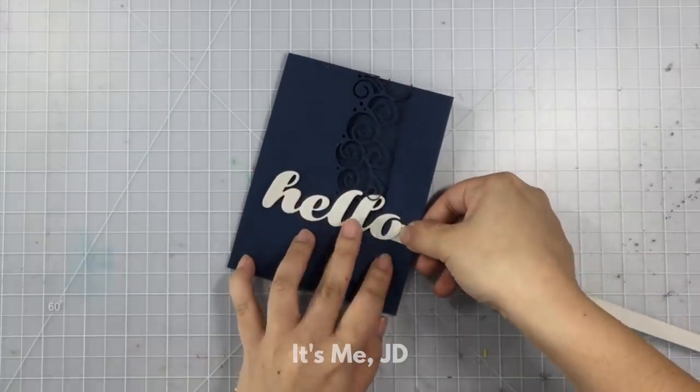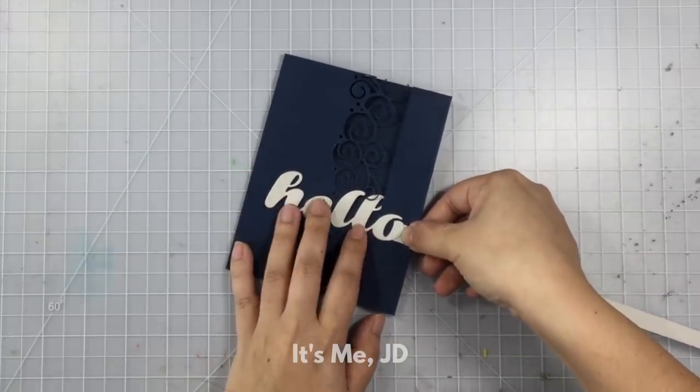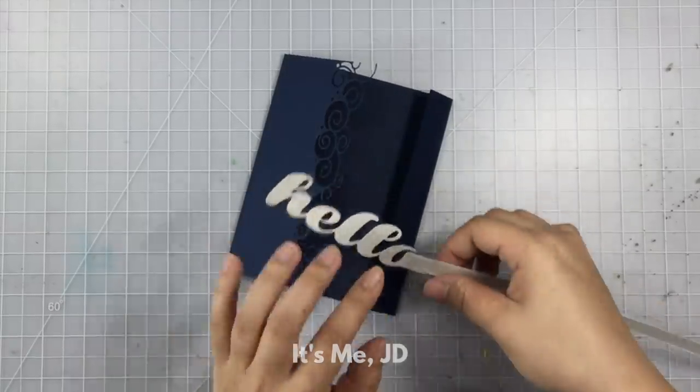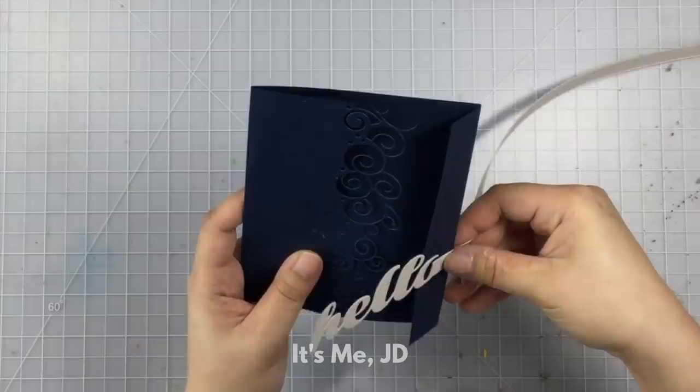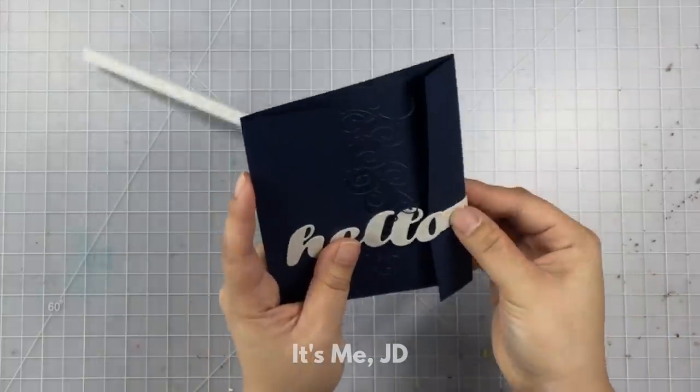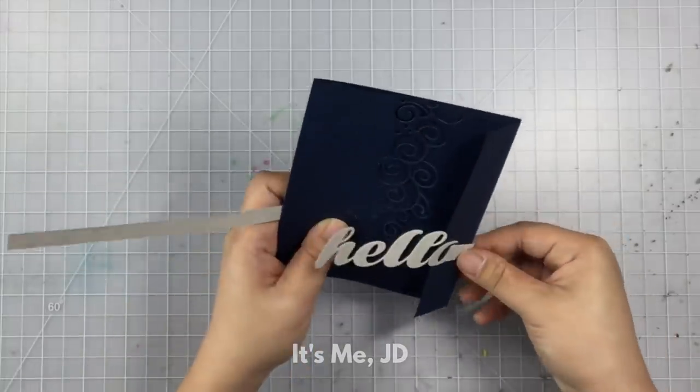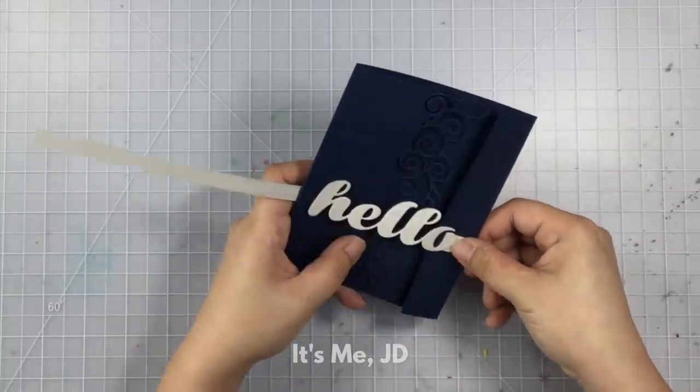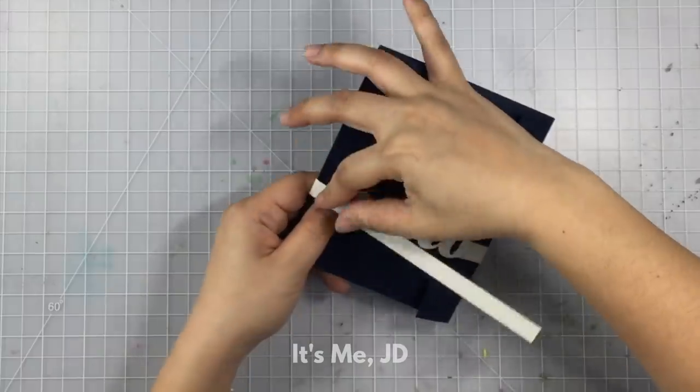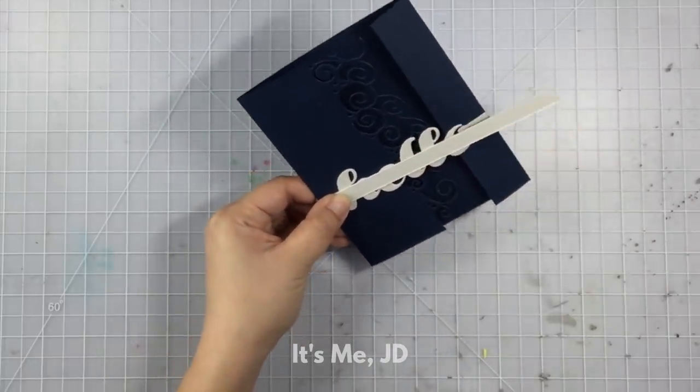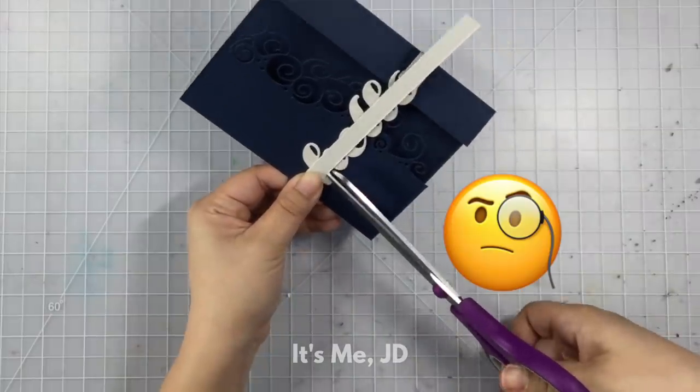And as you saw I just stuck some adhesive on one end of the word die cut and then I'm going to carefully somewhat score and then wrap the strip around my card just to make sure that the word die cut is as centered as possible. You can definitely measure if you want to. I am somewhat of a crafty rebel and therefore sometimes I just kind of like to eyeball things.